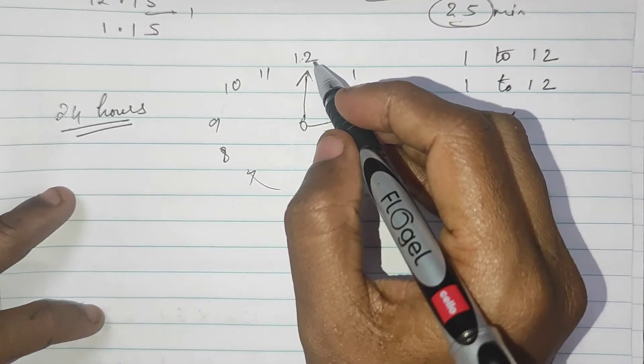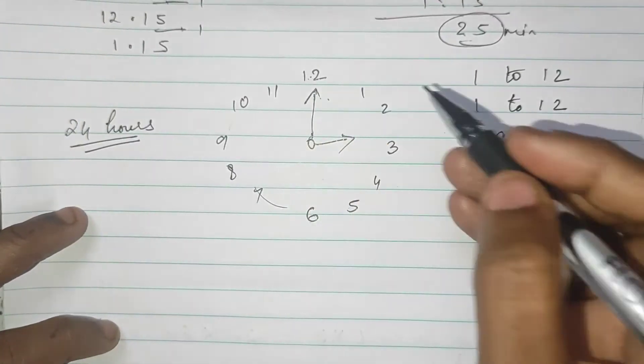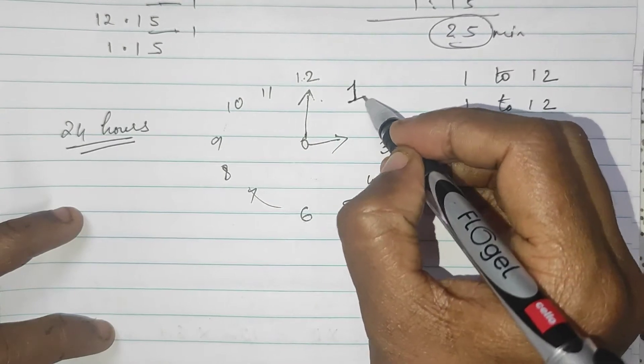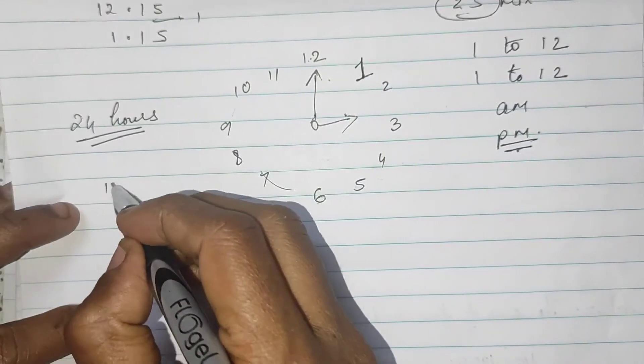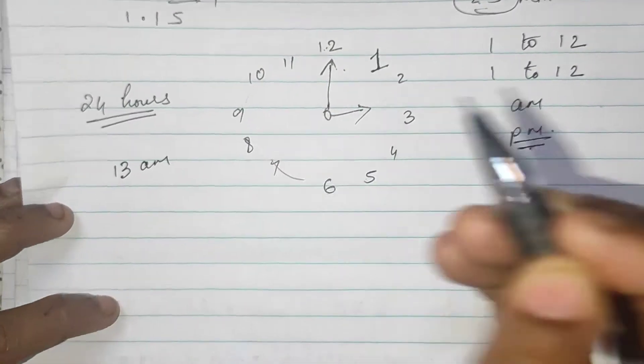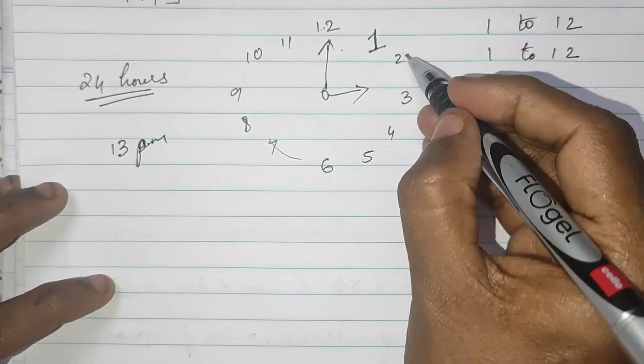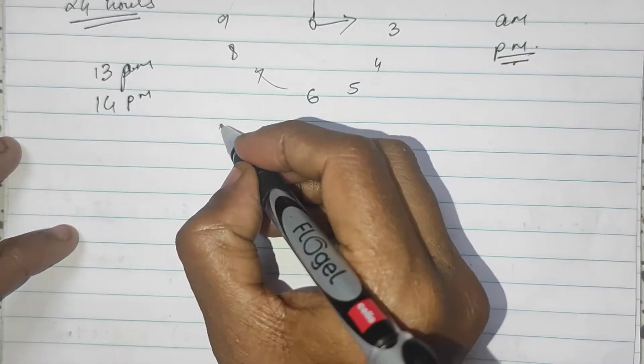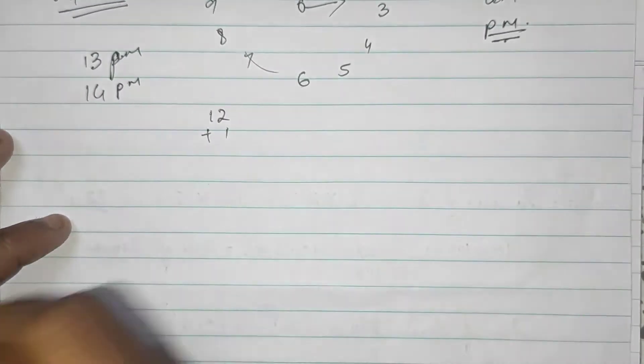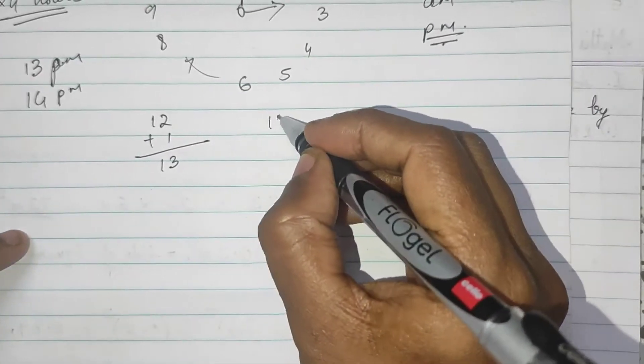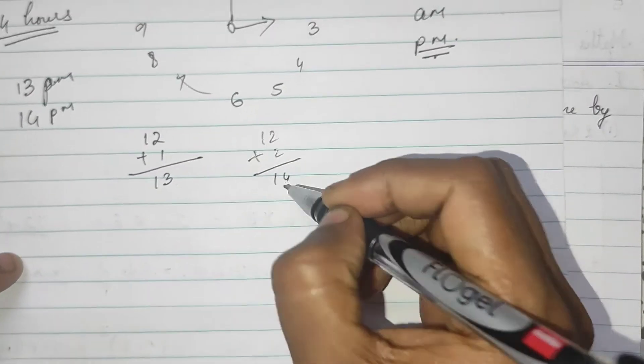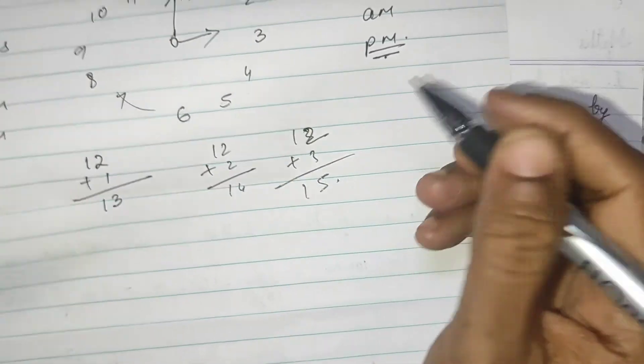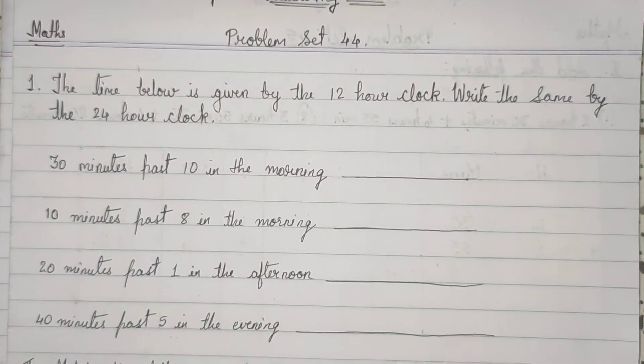after 12 o'clock, this one becomes 13. This is afternoon. 2 becomes 14 pm. In short, after 12 we keep adding. 12 plus 1, 13. 12 plus 2, 14. 12 plus 3, 15.